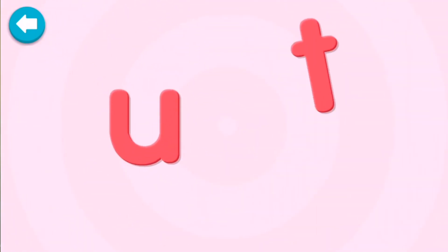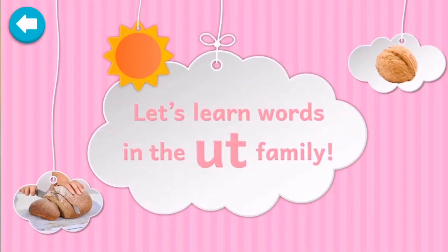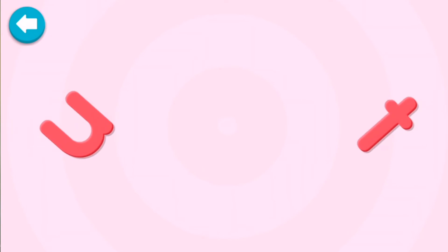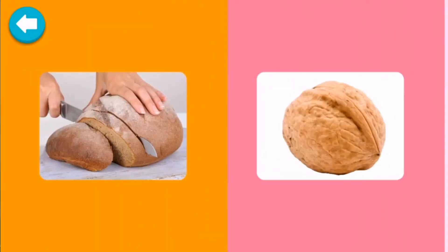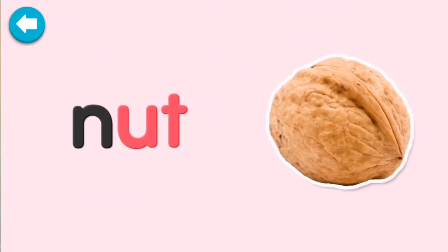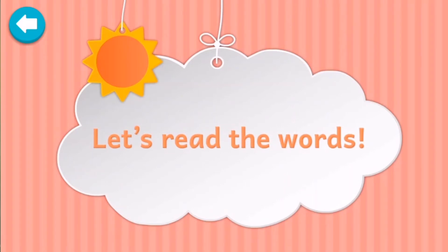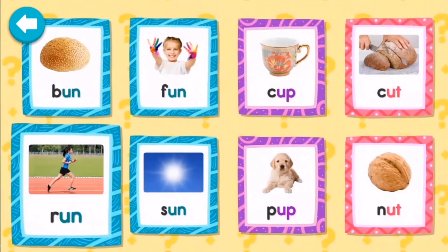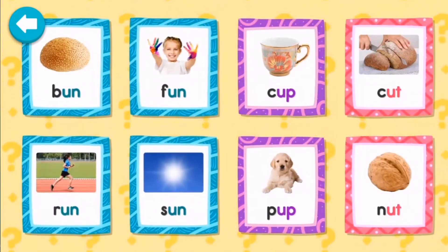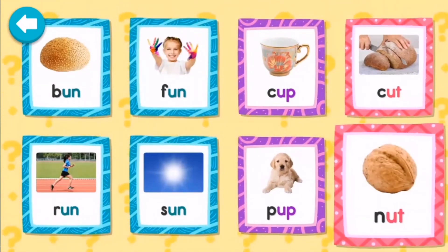Let's learn words in the UT family. K-ut: cut. N-ut: nut. Now let's read the words: fun, run, sun, cup, pup, cut, nut.